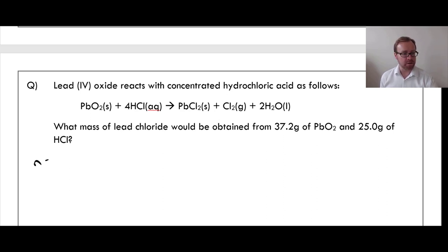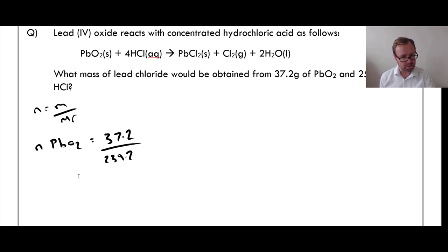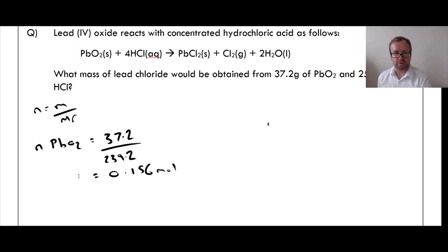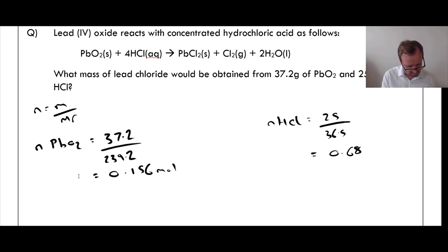Work out the moles of each reactant to identify the limiting reagent. Moles of PbO₂ = 37.2 ÷ 239.2 = 0.156 moles. Moles of HCl = 25 ÷ 36.5 = 0.685 moles of HCl.